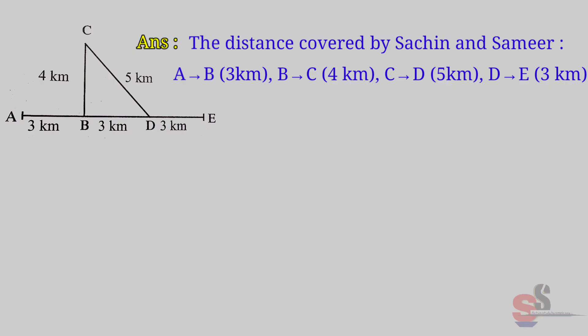See carefully: A to B is 3 km, then B to C is 4 km, then C to D is 5 km, and D to E is 3 km. That means total distance is equal to 3 plus 4 plus 5 plus 3 is equal to 15 km. The actual distance covered is equal to 15 km.